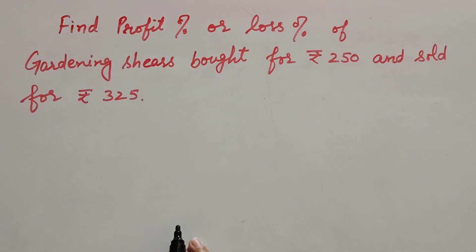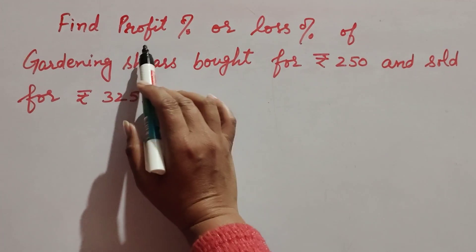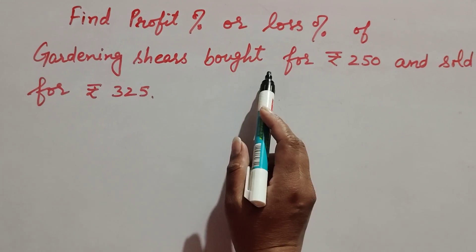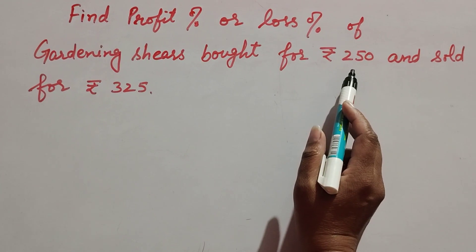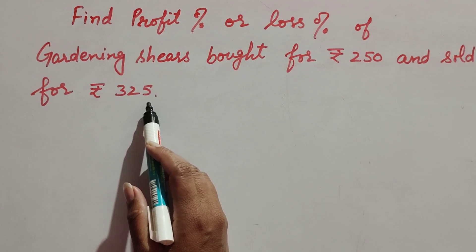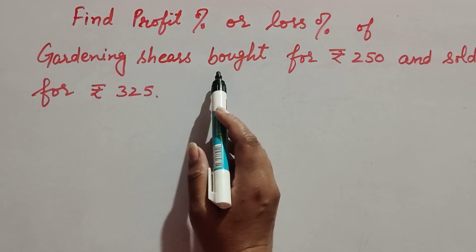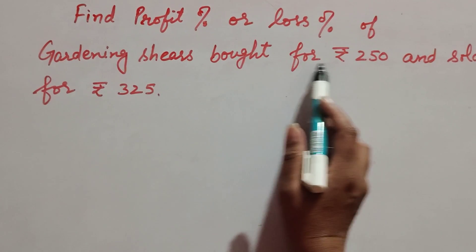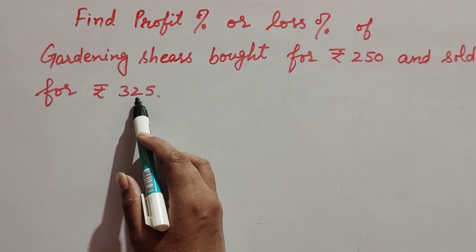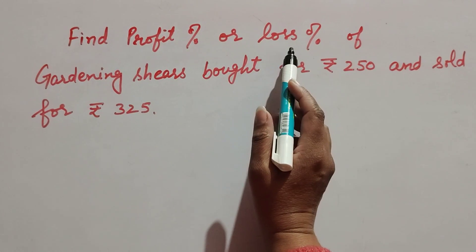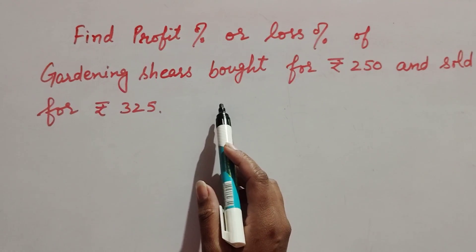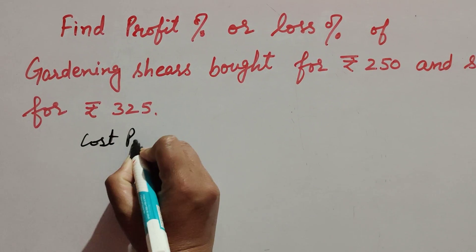Hello friends, welcome to my channel. In this video we discuss finding profit percentage or loss percentage of gardening shares bought for rupees 250 and sold for rupees 325. The given things are the cost price of gardening shares and selling price of gardening shares, and we find the profit percentage or loss percentage.